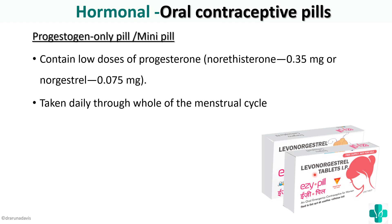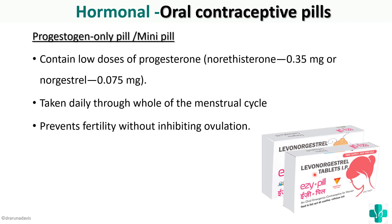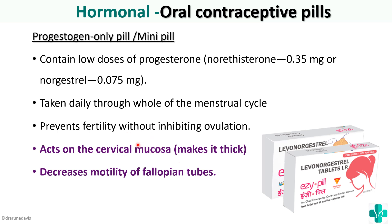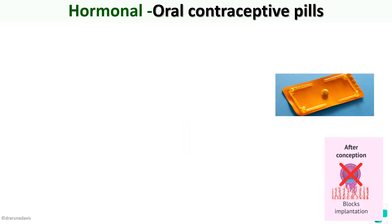The mini pill is taken daily throughout the whole menstrual cycle. It prevents fertility without inhibiting ovulation — an important point to remember. It works by acting on the cervical mucus and making it thick, and by decreasing the motility of the fallopian tubes. So either the sperms cannot enter through the thick cervical mucus, or they cannot reach the ovum due to reduced tubal motility.